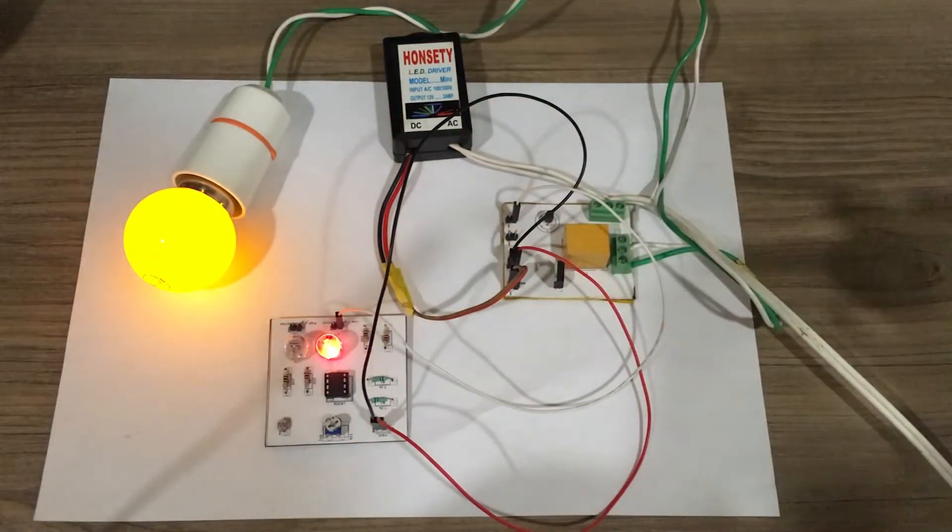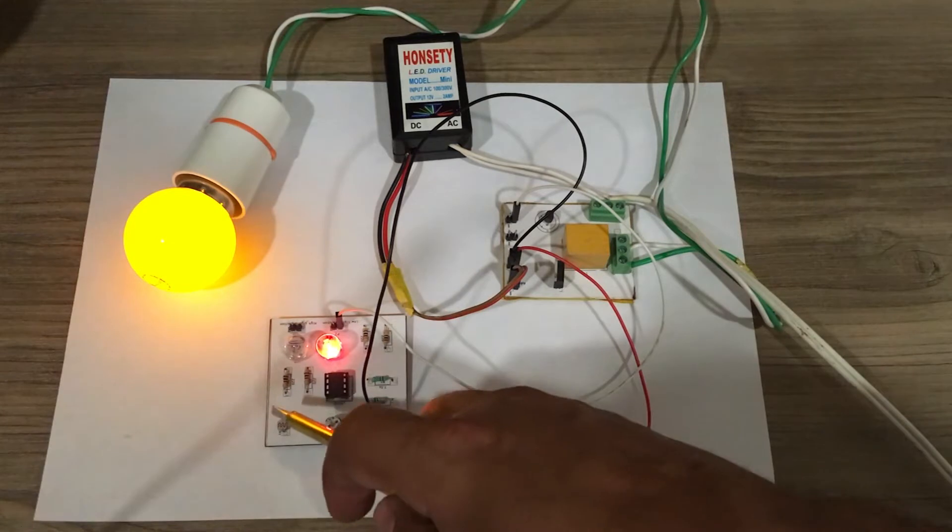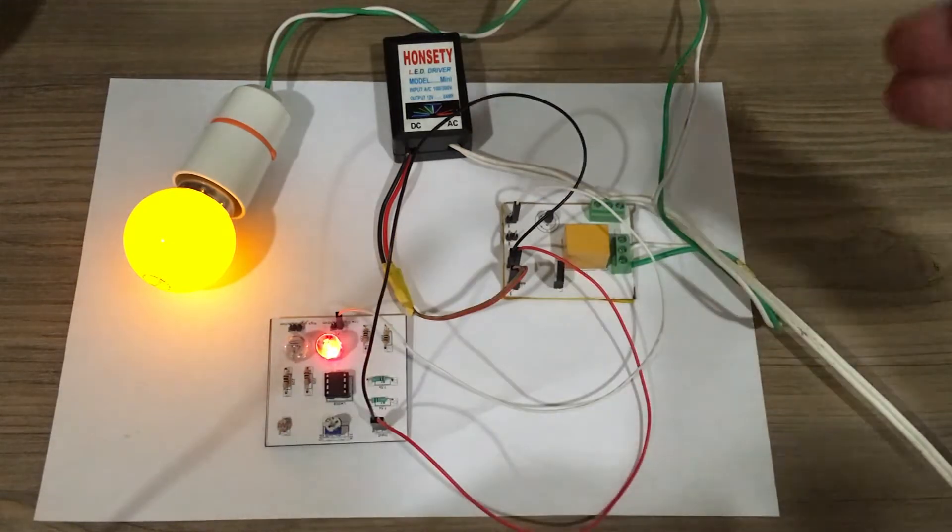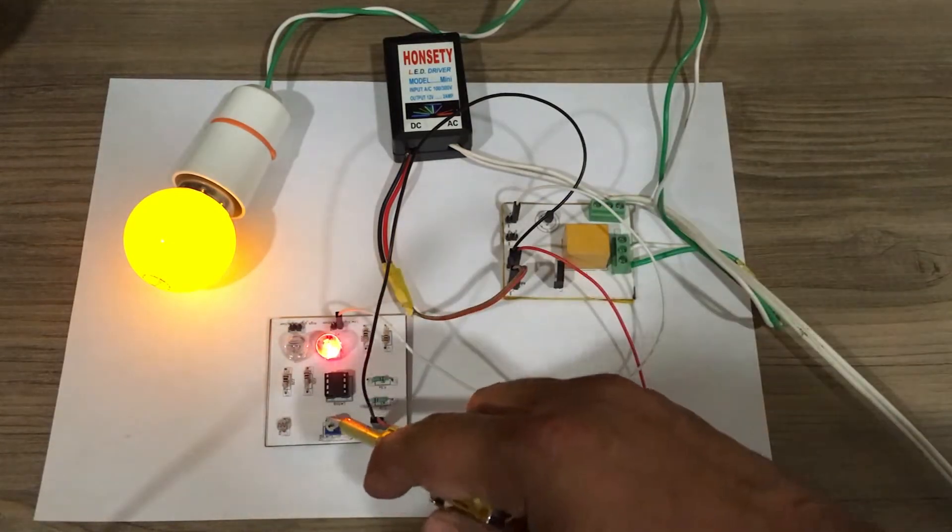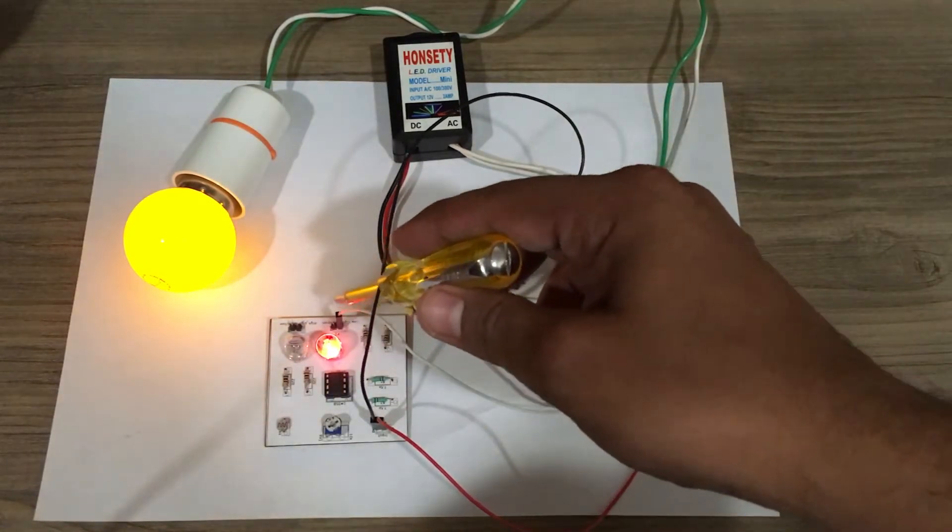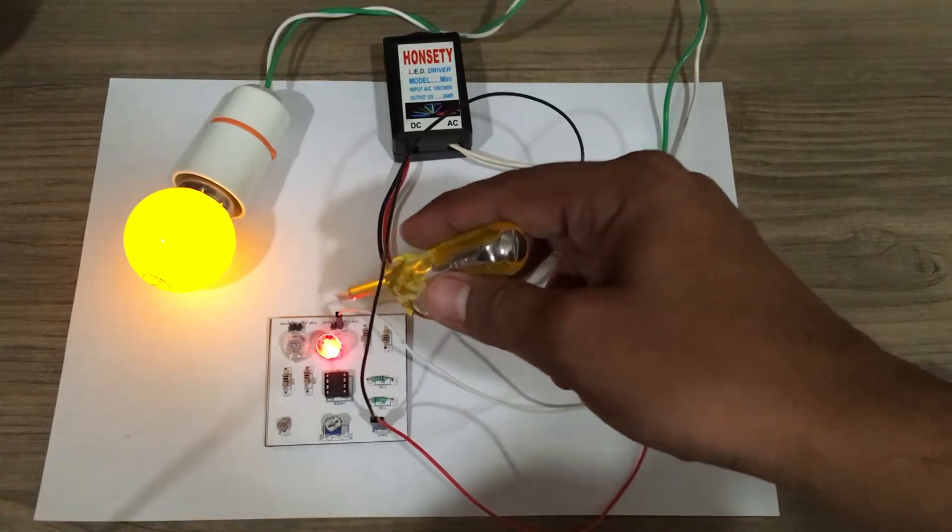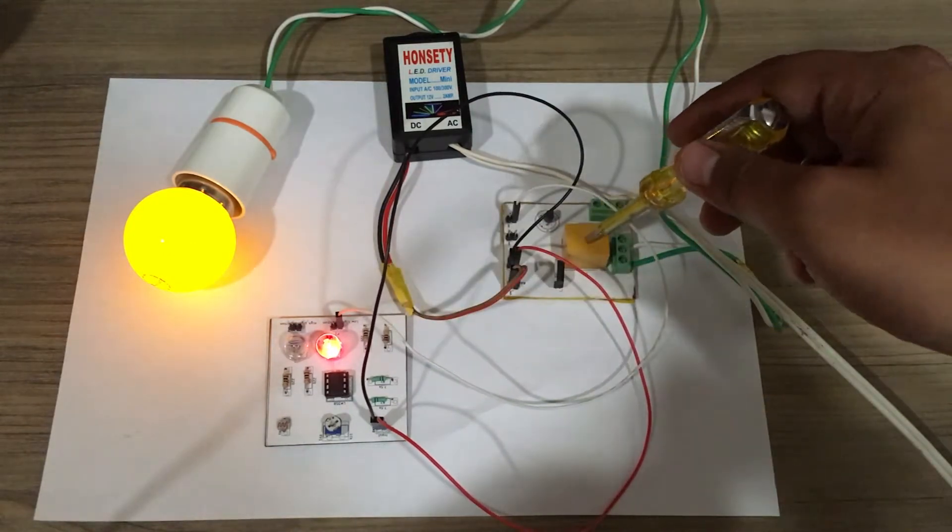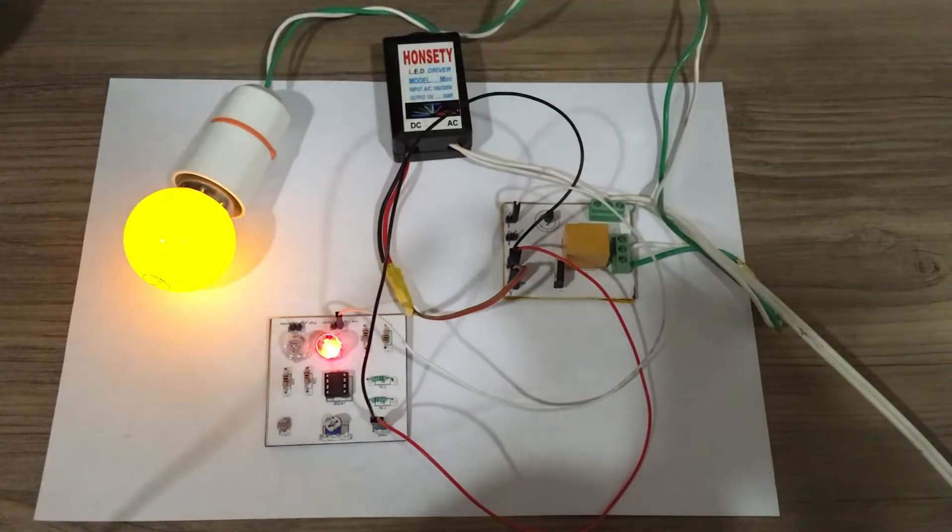So as soon as I switched off my table lamp, the light coming up on the LDR over here went below the threshold that I had set using the potentiometer. I get a red light saying the light intensity is low, which gives a logic one at the output over here, which triggers the relay and my light gets switched on.